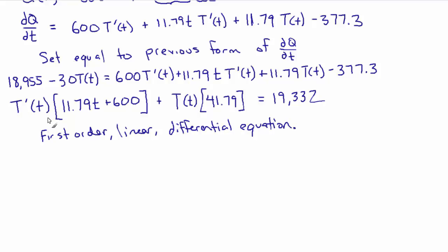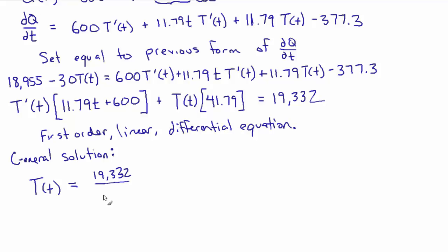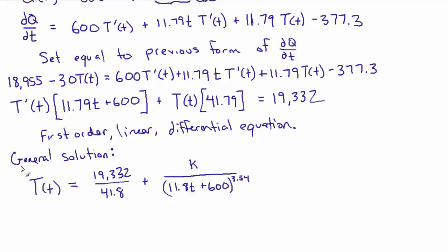This equation has a general solution of the form: T(t) equals 19,332 over 41.8 plus some arbitrary constant K over (11.8t plus 600) raised to the power 3.54. For the derivation using an integrating factor, please see the separate video.